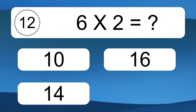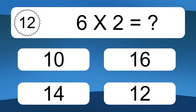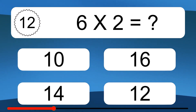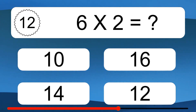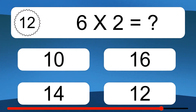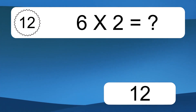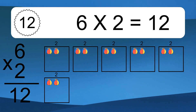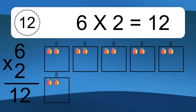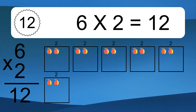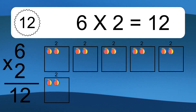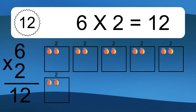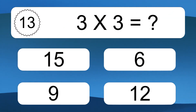6 times 2 equals what? 6 times 2 equals 12. We have 6 boxes, and each box has 2 colorful balls inside.